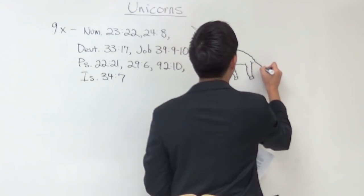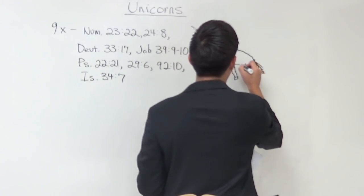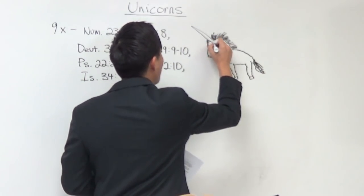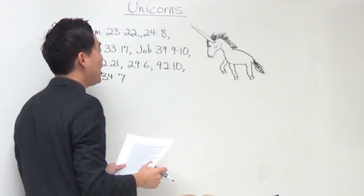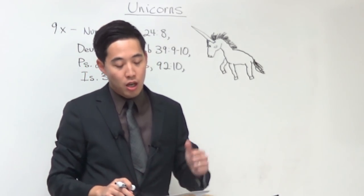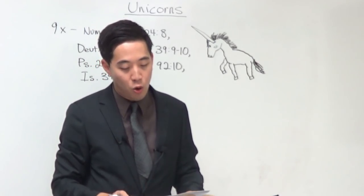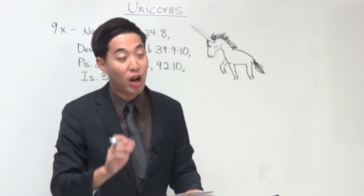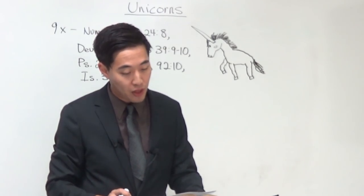You might say, how so? Because in Webster's 1828 dictionary, for some of you who don't know, a unicorn is not what you think. A unicorn simply means in Webster's 1828 dictionary as follows. The first definition is an animal with one horn, the monoceros. This name is often applied to the rhinoceros. How about that?